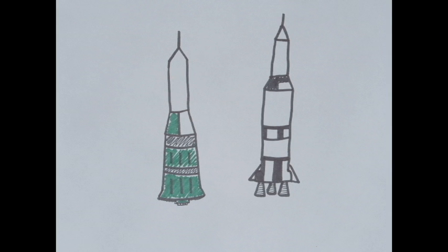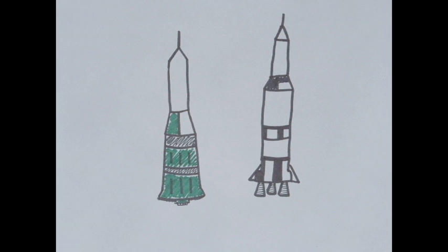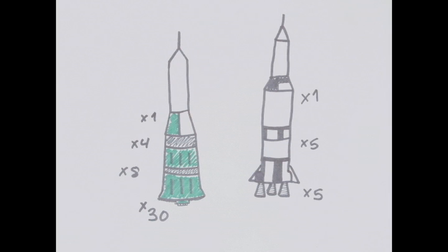The biggest problem, though, was the carrier rocket, the N1, the most powerful rocket ever built. In an effort to save time and money, the N1 used clusters of small engines rather than large engines like those used on the Saturn V.